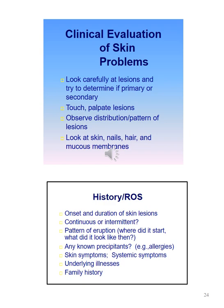When obtaining a history and review of systems, you want to get the following information: onset and duration of the skin lesions, whether it is continuous or intermittent, pattern of eruption — where did it start and what did it look like. You also want to know if there are any known precipitants such as allergies, skin symptoms and systemic symptoms, any underlying illnesses, and family history.